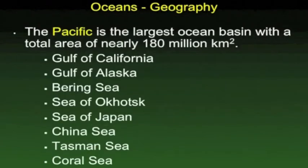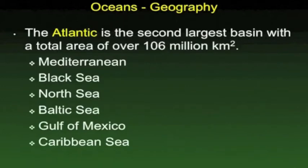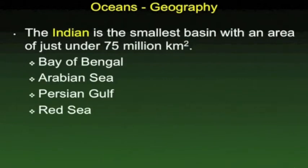The Pacific Ocean is the largest ocean, made up of six major seas and two large gulf areas. The Atlantic Ocean, to the east of the Americas, is the next largest and includes the Mediterranean, the Gulf of Mexico, and the Caribbean Sea. The Indian Ocean is the smallest, located between Africa and Australia, and includes the Gulf of Arabia, the Persian Gulf, the Red Sea, and the Bay of Bengal, just south of India.